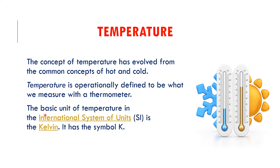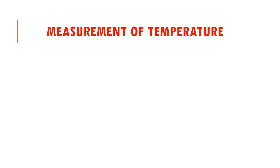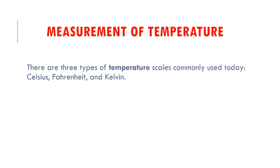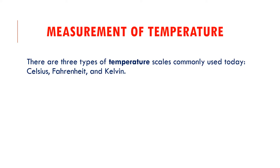The basic unit of temperature in the SI system is Kelvin, and its symbol is K. There are three types of temperature scales commonly used today: Celsius, Fahrenheit, and Kelvin. We will learn about each one.